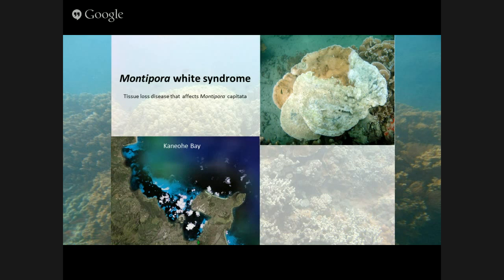I study one particular disease. There are several types of coral diseases in Hawaii — over 17 documented — but one of the most severe and widespread is what we call Montipora White Syndrome. White Syndrome means it's tissue loss — you see the white skeleton once the tissue has been lost. Montipora is the scientific name for the Hawaiian rice coral. This disease was first documented in Kaneohe Bay, has been reported from other islands, but is most prevalent in Kaneohe Bay, so that's where we study it the most.